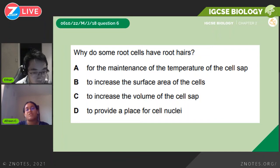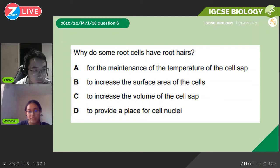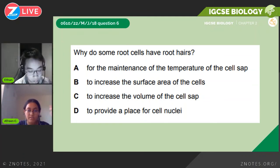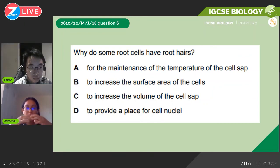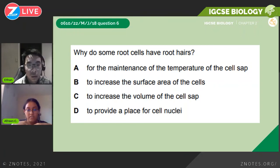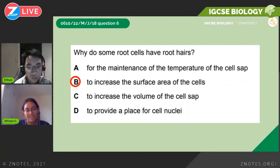The next question asks why some root cells have root hairs. Remembering the adaptation: plant roots have root hair cells to increase the surface area of the roots for maximum absorption of water. The answer is B.